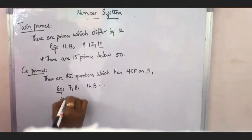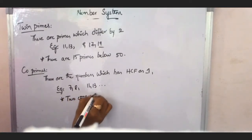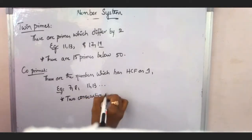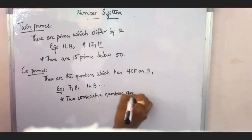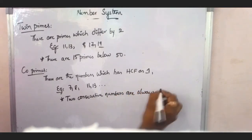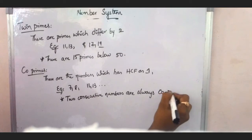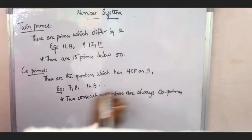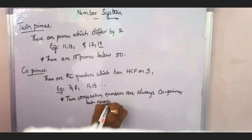And next, co-primes. These are the numbers which has HCF as 1. To add two numbers. And then, the highest common factor is 1. This will be discussed in the next class. In the next video, we will discuss that highest common factor.